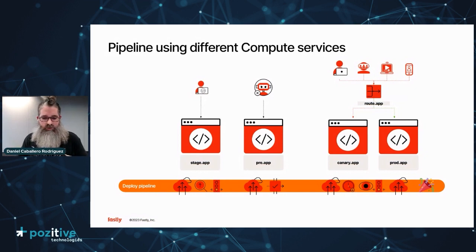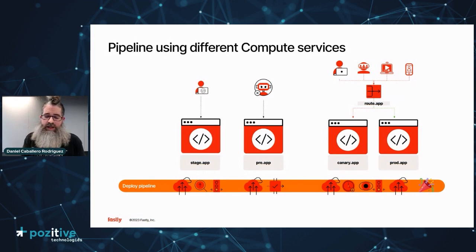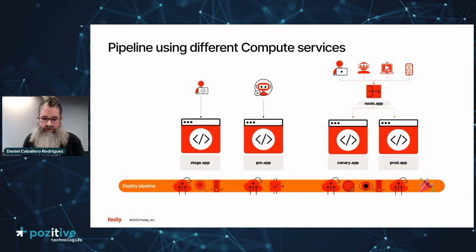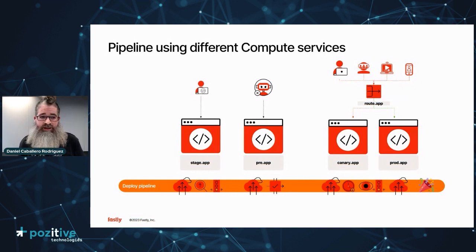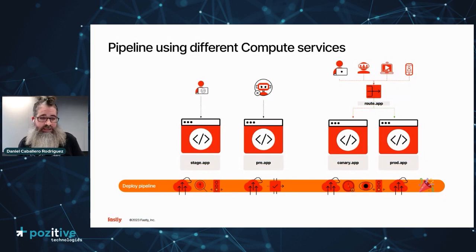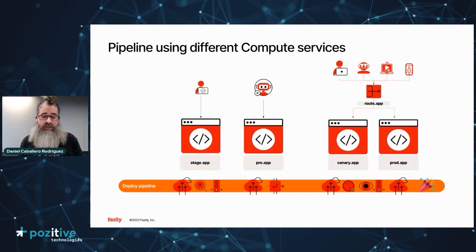There's an interesting concept in the top right of the diagram: the router app. Given you can deploy many applications to Fastly, there's a concept called service chaining — one Fastly application calling to another Fastly application. You can have multiple services depending on each other, as in a microservices architecture. This lets you implement patterns like the API gateway pattern, or have a simple service that does HTTP routing controlling which portion of requests goes to canary versus production.